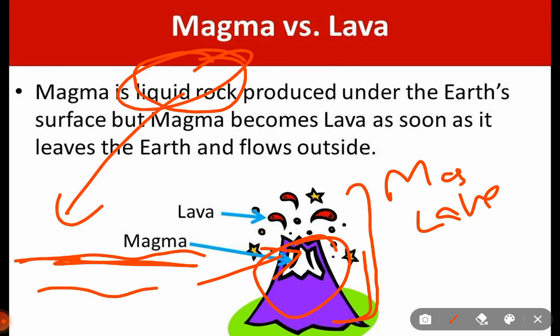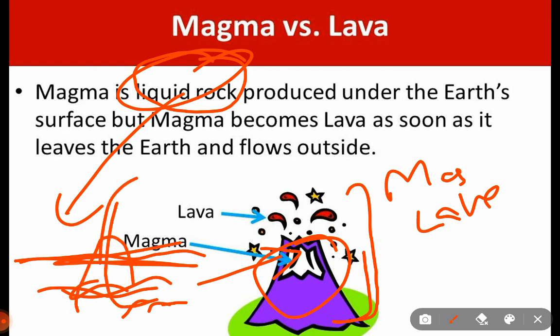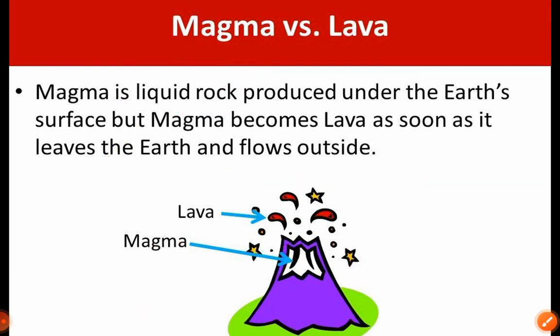When the liquid rock is under the earth's surface, it is called magma. And when this magma flows out — that is, erupts out from the mountain — that liquid rock is called lava. So let's read this now.